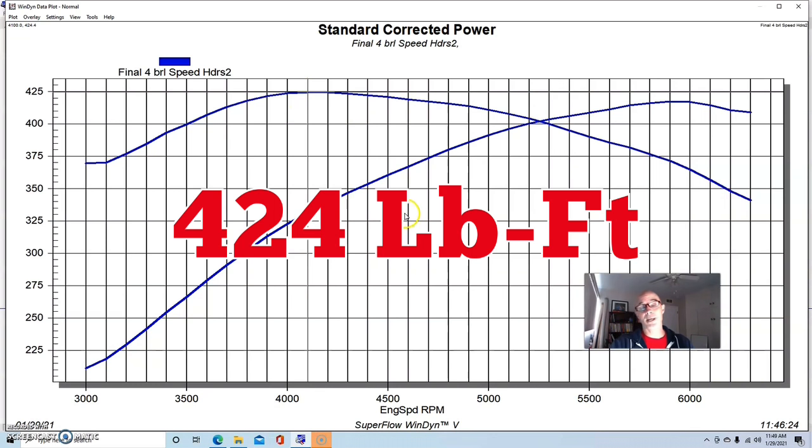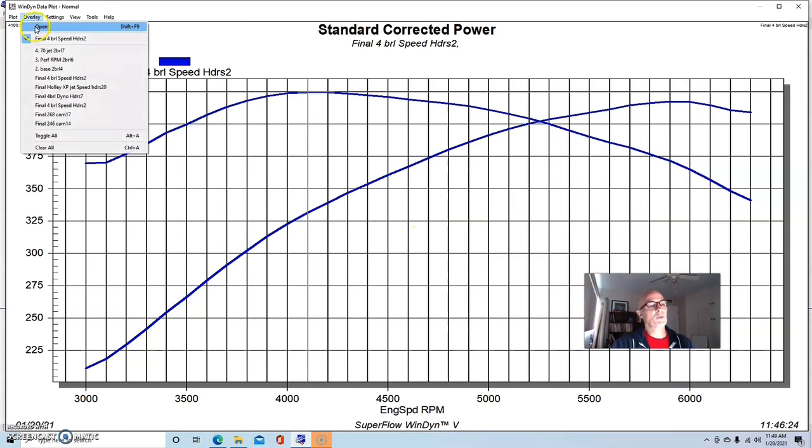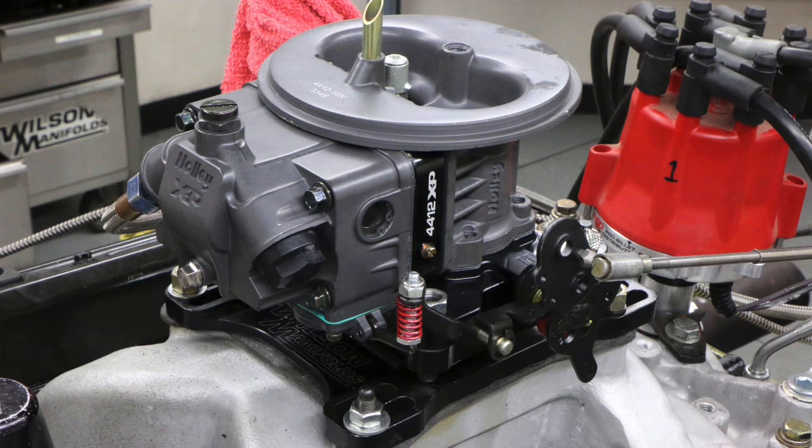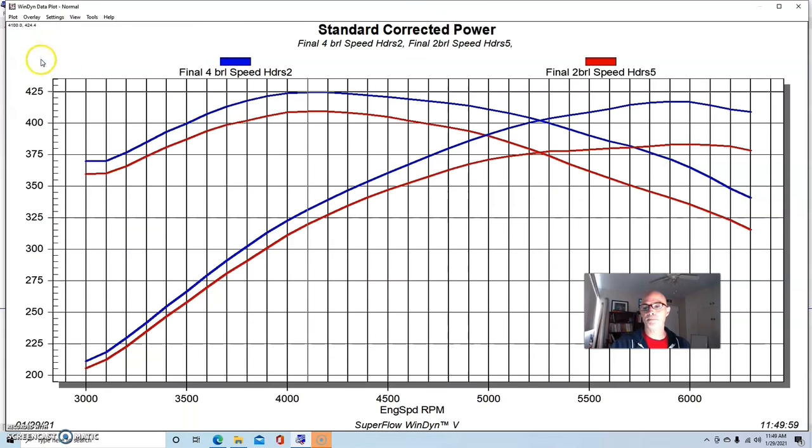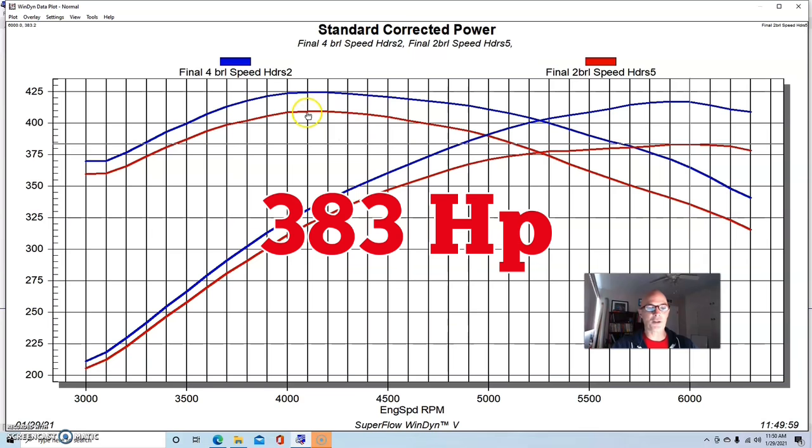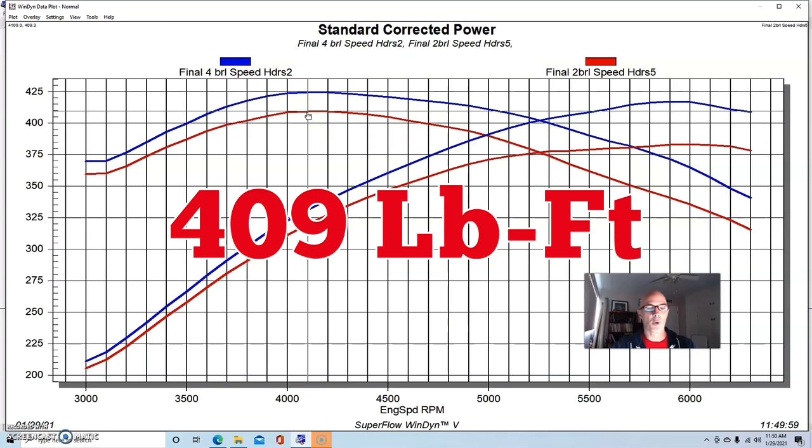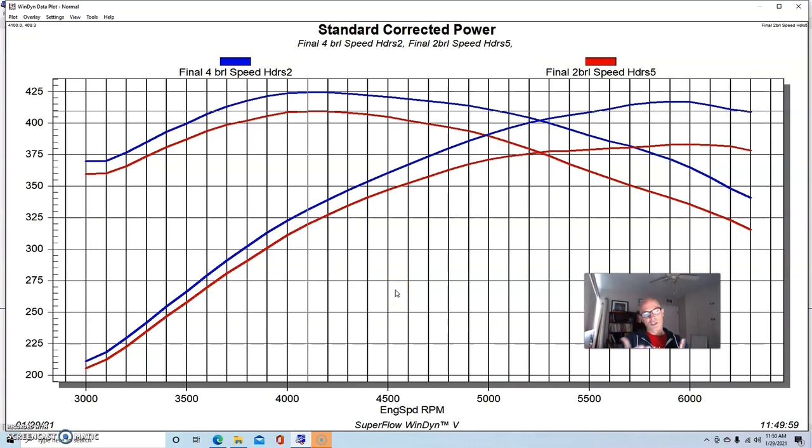Here's what happened when we installed the XP 4412 two barrel 500 CFM carburetor. As we did before, we lost power compared to the four barrel, and that's normal. This combination produced 383 horsepower and 409 foot pounds torque. Once again you can see that we lost power basically everywhere, even down to 3000 rpm. The two barrel, the 500 CFM two barrel, made less power than the four barrel did even down at 3000 rpm, and then as normally happens the power differences increased with rpm.